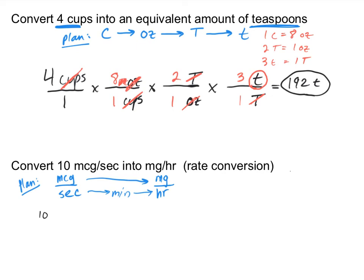We start by writing what we are converting — the starting rate. Then we focus on canceling micrograms first. I multiply by a conversion factor where micrograms is in the denominator (because it's in the numerator of my starting rate) and milligrams is in the numerator. One milligram equals 1,000 micrograms. If I stopped here, micrograms would cancel and I'd have milligrams per second. But I still need to cancel seconds, so I multiply by another conversion factor.